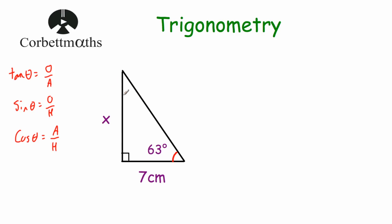Now let's label the sides of our right-angle triangle. The side opposite the right angle is the largest side — that's the hypotenuse. We're going to be using the 63-degree angle, so the side opposite it will be the opposite — that's X. And that means the remaining side is the adjacent. So we've labelled our three sides: hypotenuse, opposite, and adjacent.